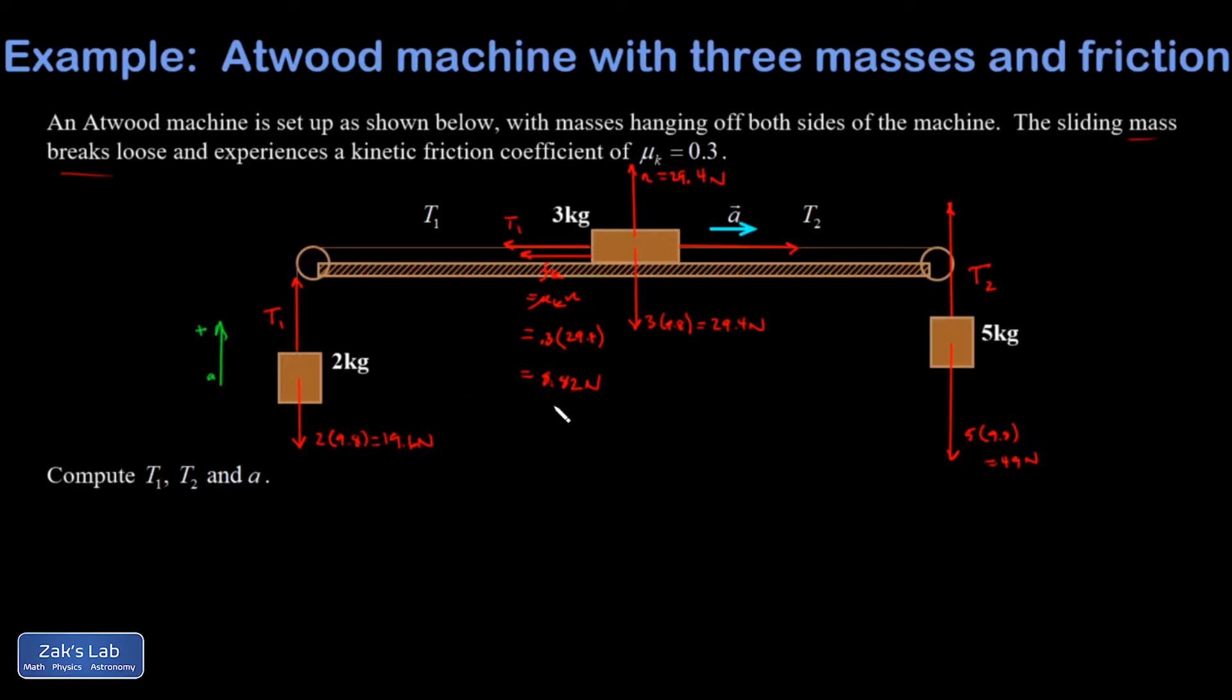All right this mass is accelerating upward. So the most common mistake that I see on this problem is to assume that T1 is equal to 19.6 Newtons. But if that was true the acceleration would be zero. So that can't possibly be right. This one acceleration is down.